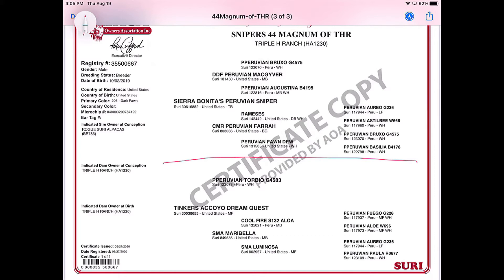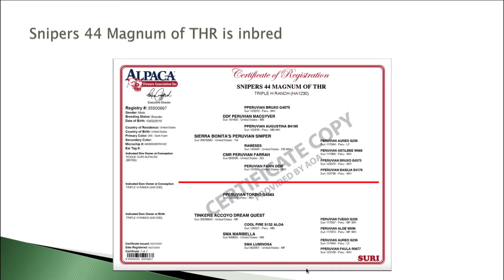We will check Tinker's Acoyo Dream Quest to see if that individual shows up on the top side of the pedigree, and we'll check every individual. If you examine this pedigree more closely, we'll see that Peruvian Oreo G236 is the sire of Ramses, and we also have that same individual as the sire of SMA Luminosa. So we have an individual that shows up on both the top side and the bottom side of the pedigree. Therefore, we know Sniper's 44 Magnum of THR is inbred.